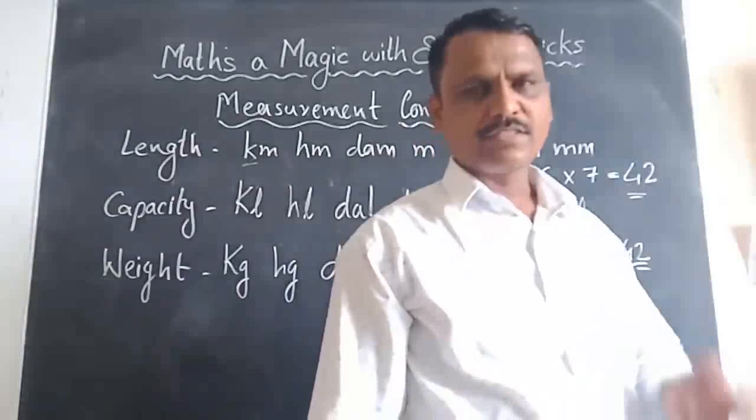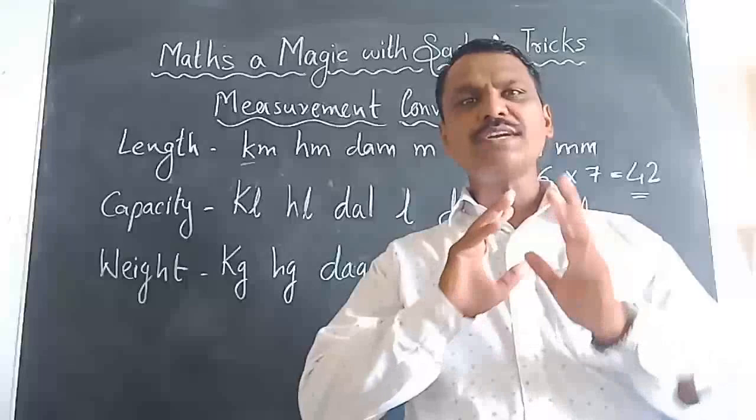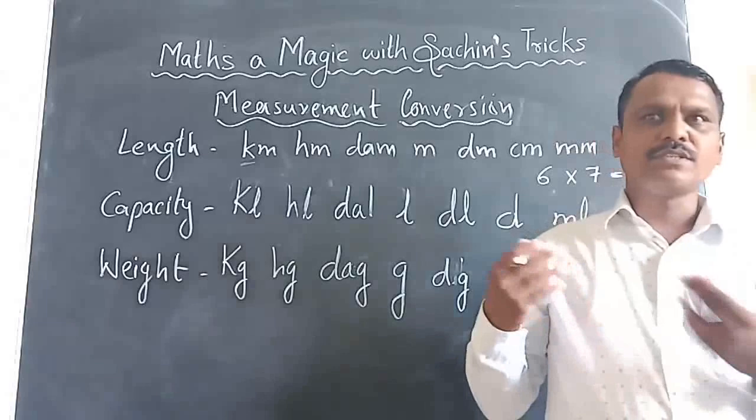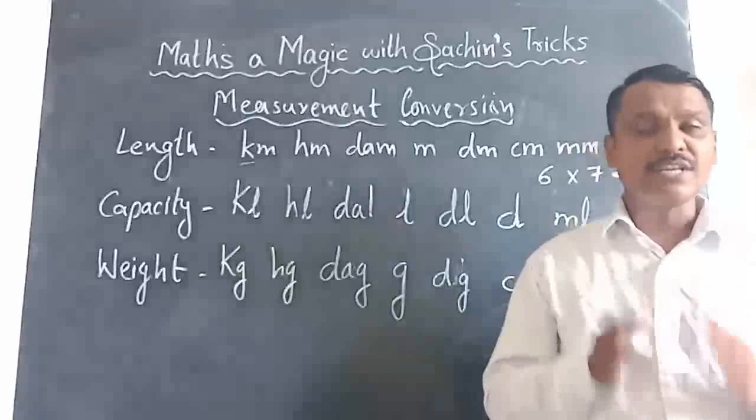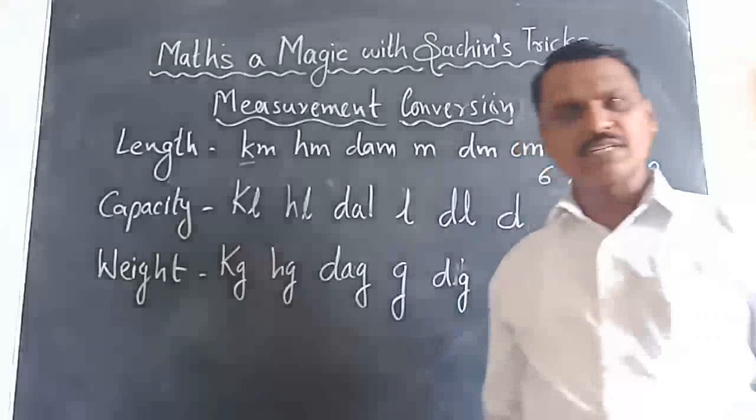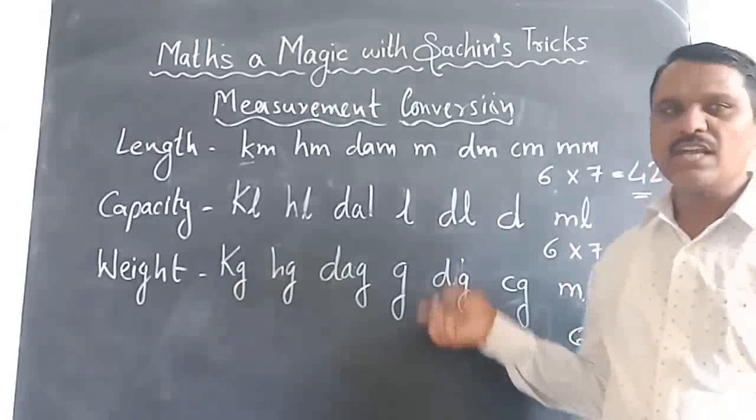In those conversions, sometimes we are multiplying, sometimes we are dividing. Most students do it by luck — they know one kilometer equals one thousand meters, but sometimes they multiply and sometimes they divide. In my trick, there will be no luck by chance; you get the perfect solution every time. So let's see how we are going to do it.